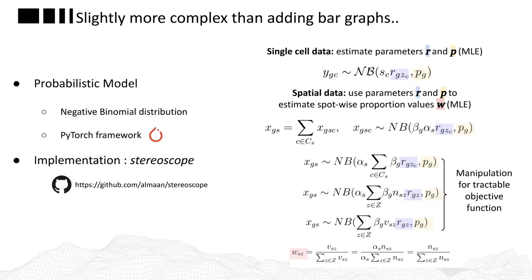It's slightly more complex — it's all built around a probabilistic model where we use a negative binomial distribution to characterize both the single cell and spatial transcriptomics data. I chose the PyTorch framework for the optimization parts. The implementation is available on my GitHub page and it's called Stereoscope. There's also an implementation in the SCVI toolbox, made by the skilled authors there. The statistical model underlying the whole method is shown here, but I won't go into the details right now.